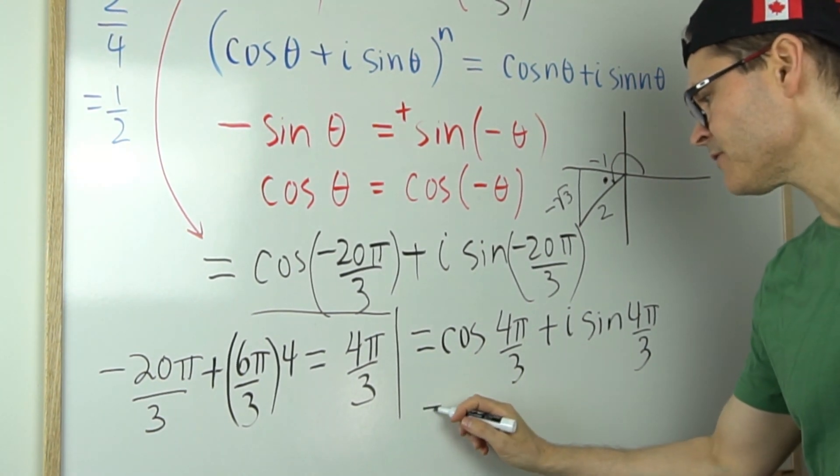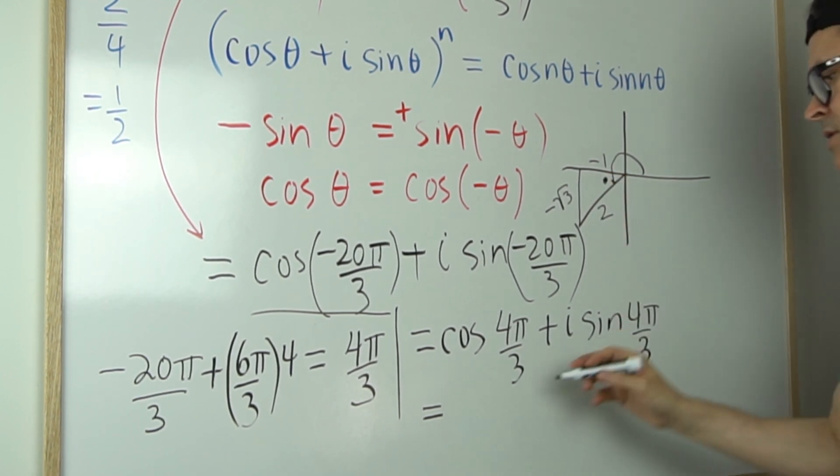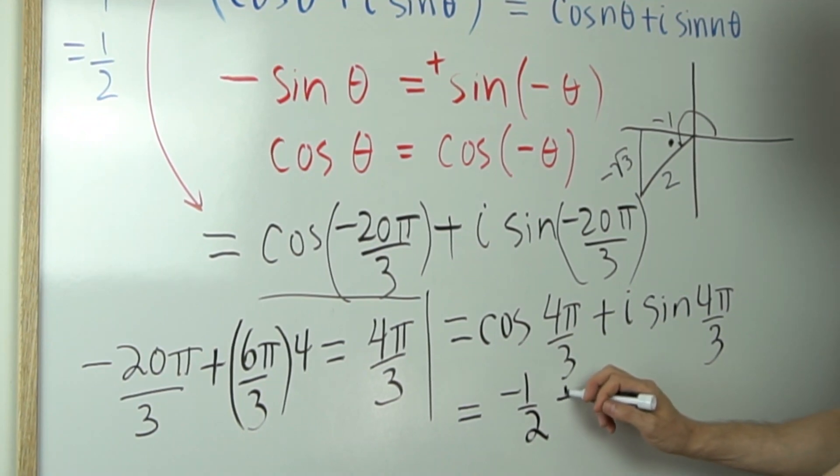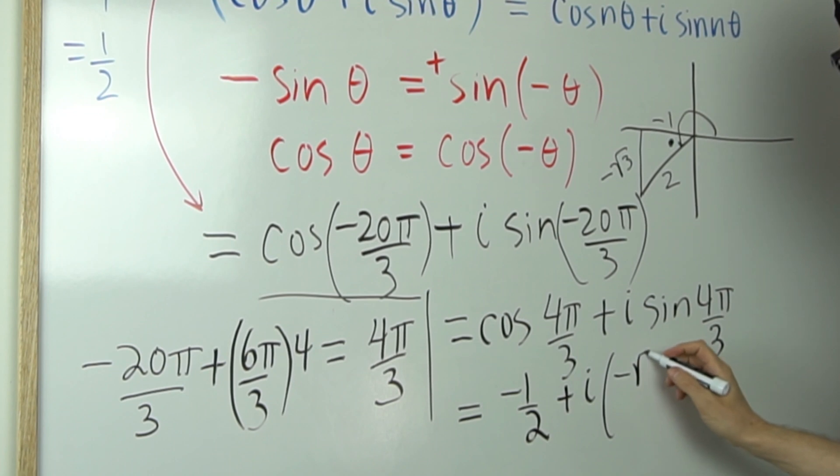And so what I know is that the cosine is going to be equal to the x coordinate divided by the radius or negative 1 over 2 plus i times the sine. Well, the sine is going to be the y coordinate, which is negative root 3. So negative root 3 divided by 2.